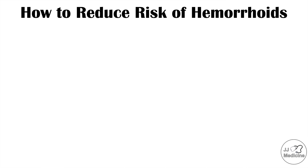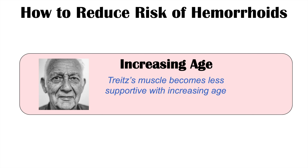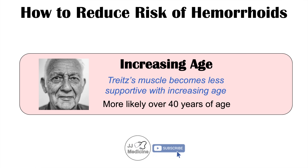The first risk factor is something we can't change: increasing age. The trites muscle becomes less supportive with increasing age, and since it supports the hemorrhoids and keeps them in place, reduced support can lead to hemorrhoidal issues. Specifically, individuals over the age of 40 are more likely to have issues with hemorrhoidal disease.